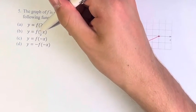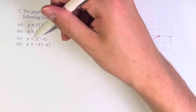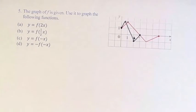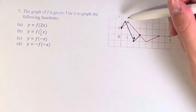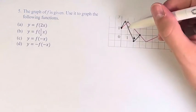Next we have y equals f of 1 half x. So this is a horizontal stretch by a factor of 2. So whereas the x value of this point went from 1 to 1 half, now it's going from 1 to 2.